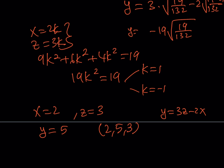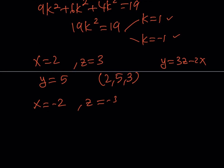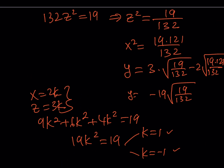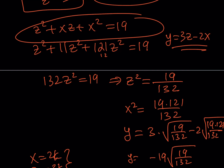For k equals negative 1: x equals negative 2, z equals negative 3, and y equals 3 times (negative 3) minus 2 times (negative 2) equals negative 9 plus 4 equals negative 5. So (negative 2, negative 5, negative 3) is another solution. The branch with x equals 11z gives radical solutions. Also remember to consider plus and minus signs when taking square roots, as there will be two solutions from that branch as well.